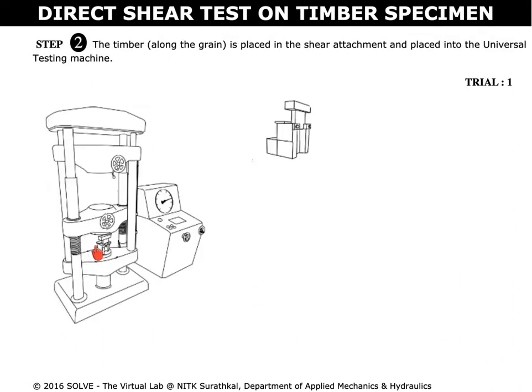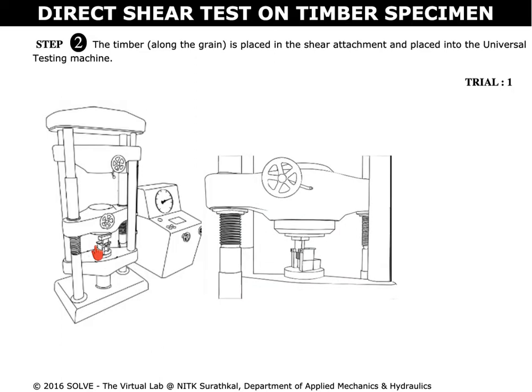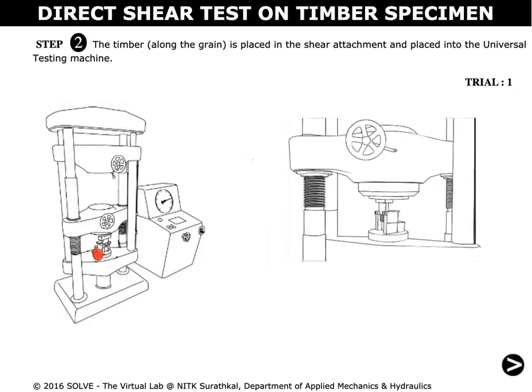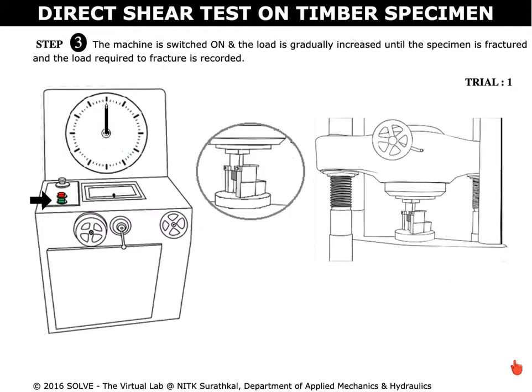Click here to place the wood specimen into the shear attachment, and then this attachment is placed into the universal testing machine. The zoomed view is shown here. Once the specimen is placed, switch on the machine by clicking on this green button.